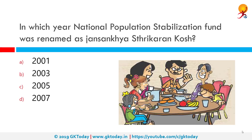In which year was the National Population Stabilization Fund renamed as Jana Sankhya Sthrikaran Kosh? The correct answer is 2003. The erstwhile National Population Stabilization Fund, now renamed as Jana Sankhya Sthrikaran Kosh, has been registered as a society on June 12, 2003, with a seed money of Rs 100 crore.